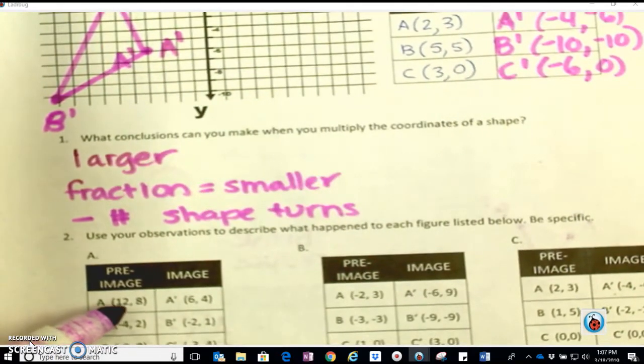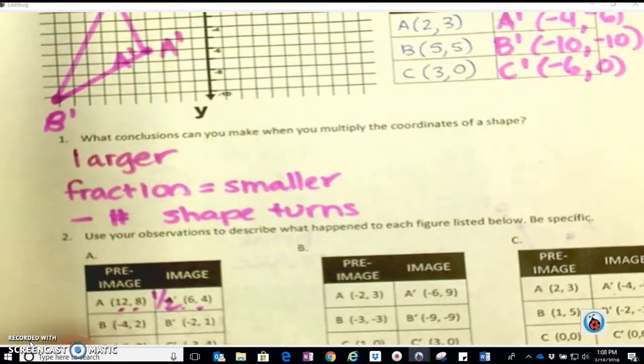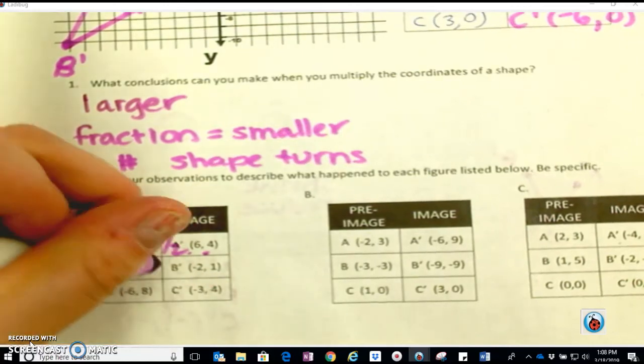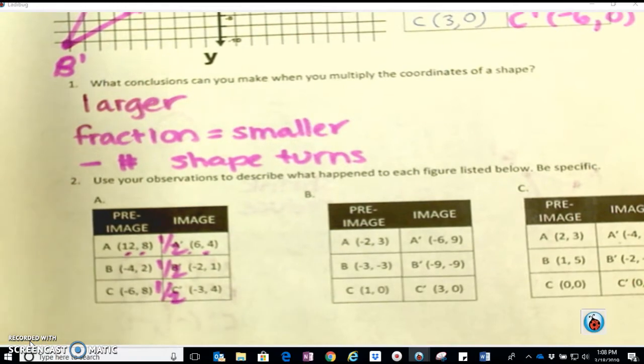I went from (2,8) to (6,4). That's kind of like dividing by two or multiplying by one half. Let's see if that was true for all of these. Negative four divided by two, two divided by two. Yep. So it means multiply by 1/2 or divided by 2.